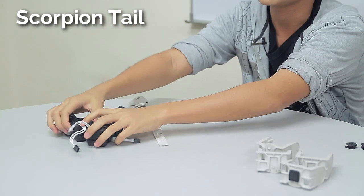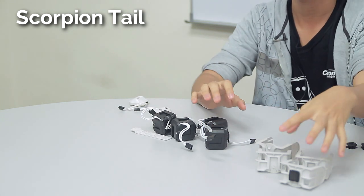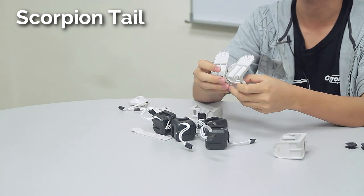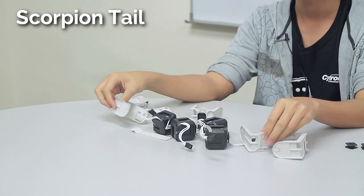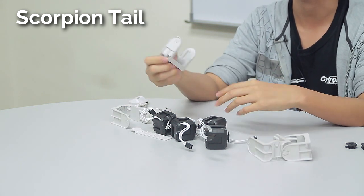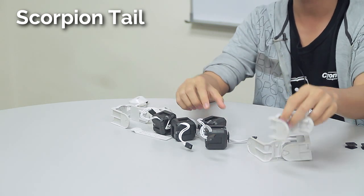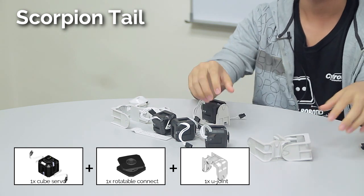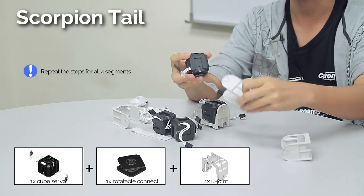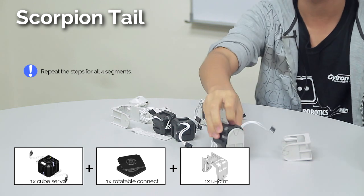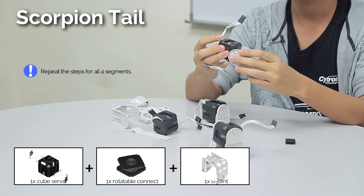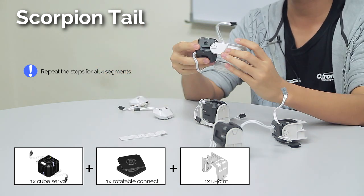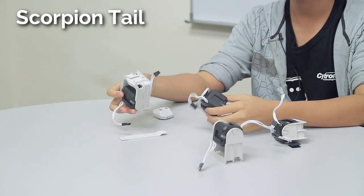Now for the tail, we will need four cube servos because the tail mainly has four segments, and we need four U-joints. Here I will use two normal U-joints and then two long U-joints. Of course, this is completely up to you because it's meant to be customizable. But if you use a different combination of U-joints, then maybe you need to modify the assembly later. Now connect the cube servos to the U-joints, all of them to make four segments. Just repeat the same thing for all four.